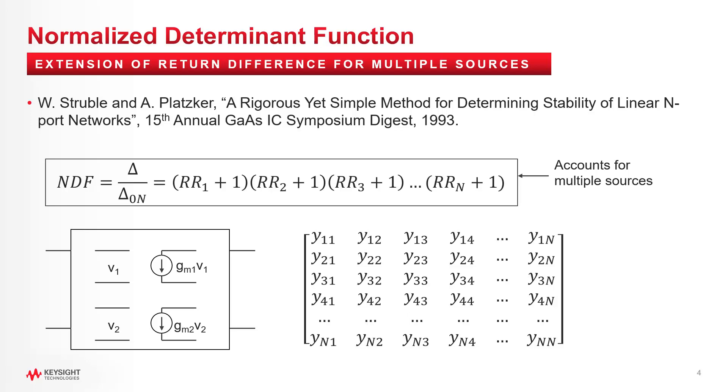To compute this, the matrix needs to be expanded to accommodate the additional sources. And the denominator, of course, needs to be stable, just like it was for return ratio. That's accomplished by normalizing the transconductance from the active sources, for example, setting them all to zero.